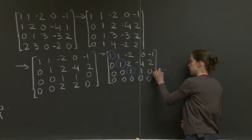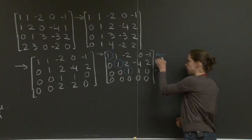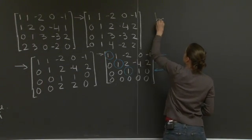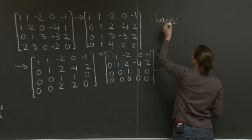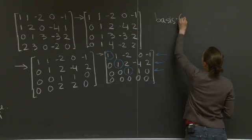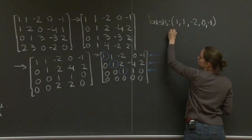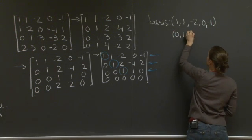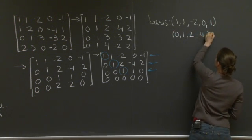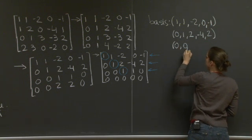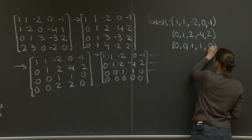So the elements for a basis, well, they will be these three. So let me write that. Basis: (1, 1, minus 2, 0, minus 1), (0, 1, 2, minus 4, 2), and (0, 0, 1, 1, 0).